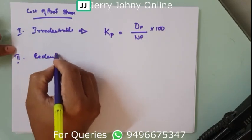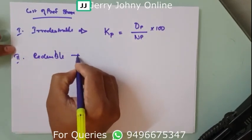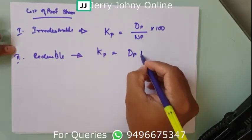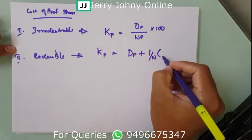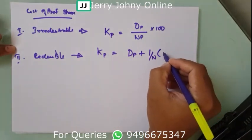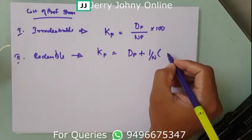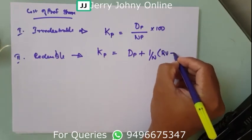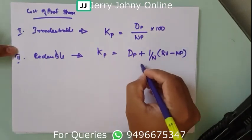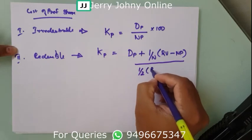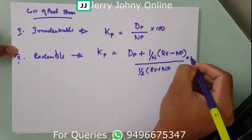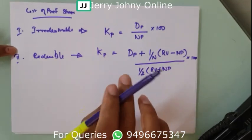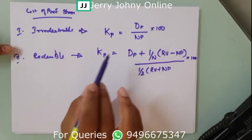Now for redeemable preference shares, the formula is: kp equals dividend paid plus (RV minus NP) divided by n, all divided by half of (RV plus NP), into 100. Here n is the redemption period. That is the cost of preference share formula.